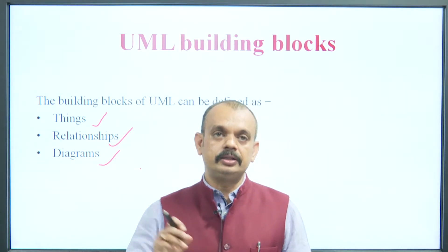Association represents the relationship between instances of classes. Instance of a class — jab aap kisi class ka object banate ho, tab hum kehte hain ki maine is class ka ek instance create kiya. Student enroll in a course — ek instance create ho gaya, do classes ke beech mein ek relationship ho gaya. Courses have some students, and courses have some exams also.